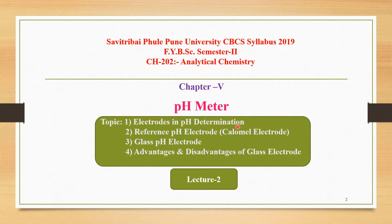Today we are going to take some more important points from the chapter pH meter. The topics we are going to discuss in this lecture are: first, electrodes in pH determination; second, reference pH electrode, that is calomel electrode; third, glass pH electrode; and fourth, advantages and disadvantages of glass electrode.